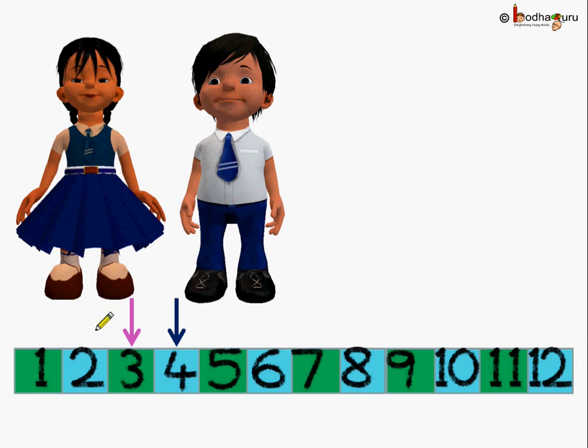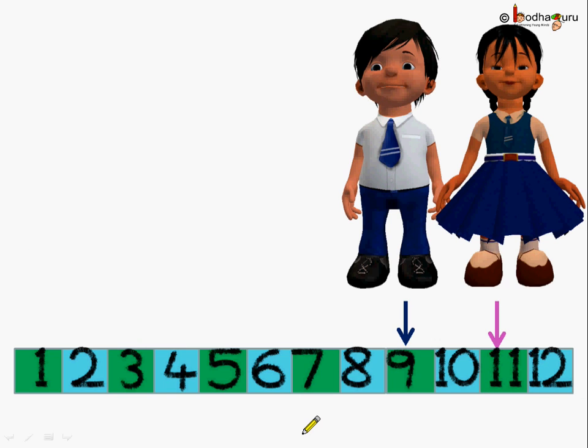So it became easy to count the number of squares hopped. See, first time Khushi hopped till third and Aman hopped till the fourth square. Next time Aman hopped till the number 9 square.